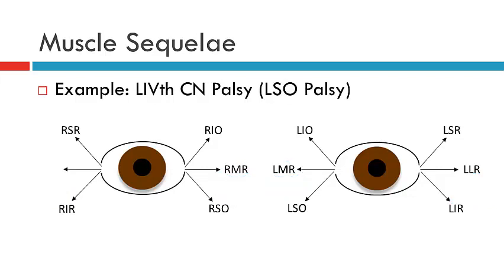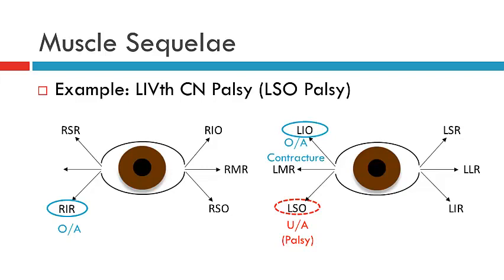Let's go through those points with one more example — this time a vertical muscle: a left superior oblique palsy. We would expect an underaction of that muscle. We would also expect that the yoke muscle or contralateral synergist, the right inferior rectus, will be overacting due to Hering's Law. We also expect to find a contracture or overaction of the ipsilateral antagonist, the left inferior oblique. And we'll see an underaction or secondary inhibition of the contralateral antagonist, the right superior rectus, due to Hering's Law.